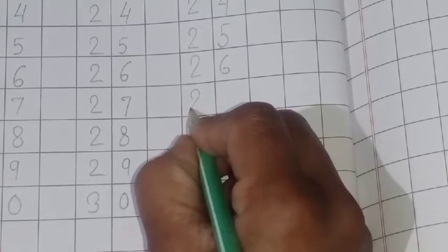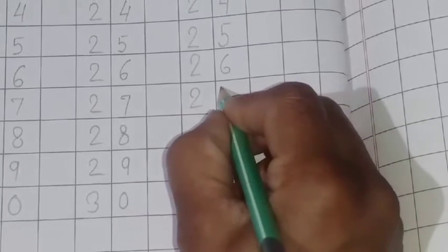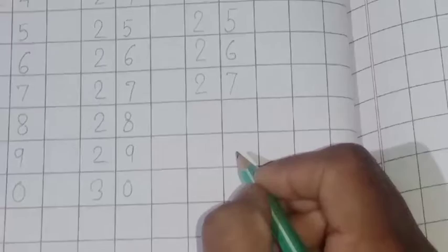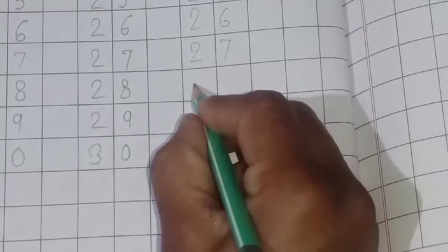Next spelling 27. T-W-E-N-T-Y, twenty. S-E-V-E-N, seven.